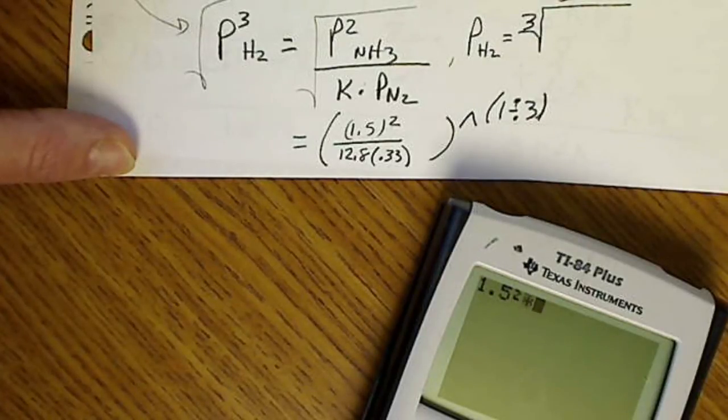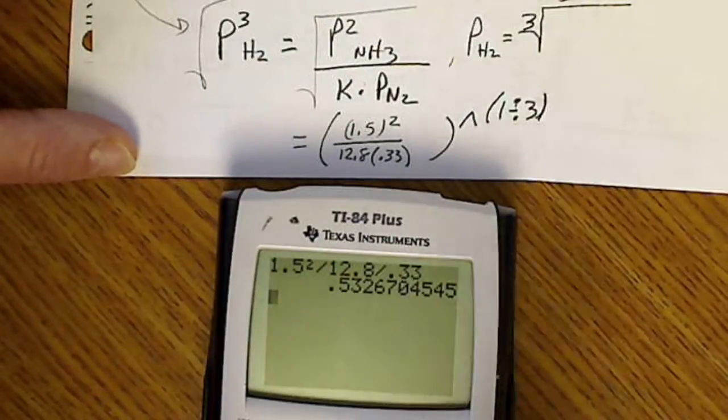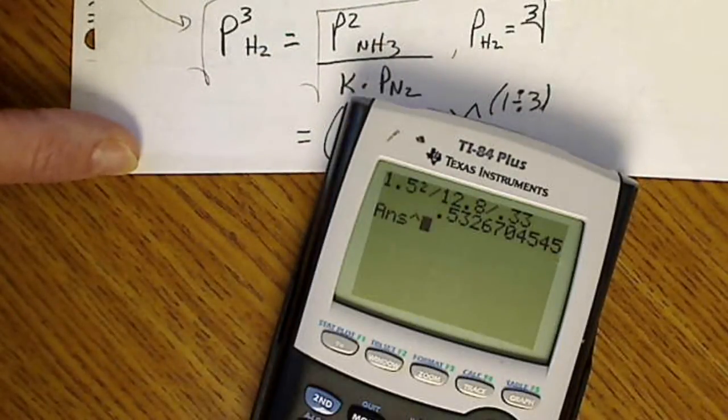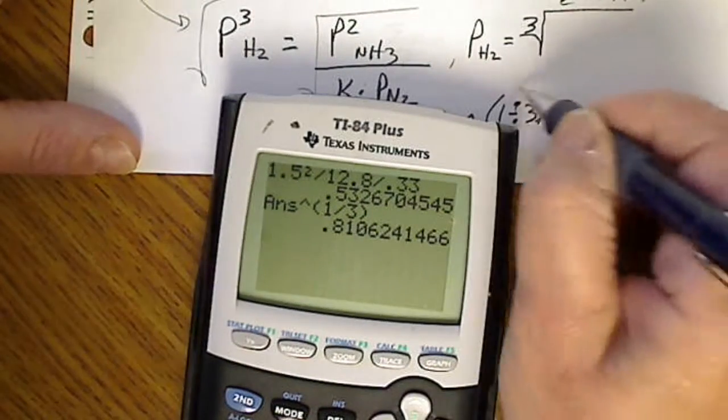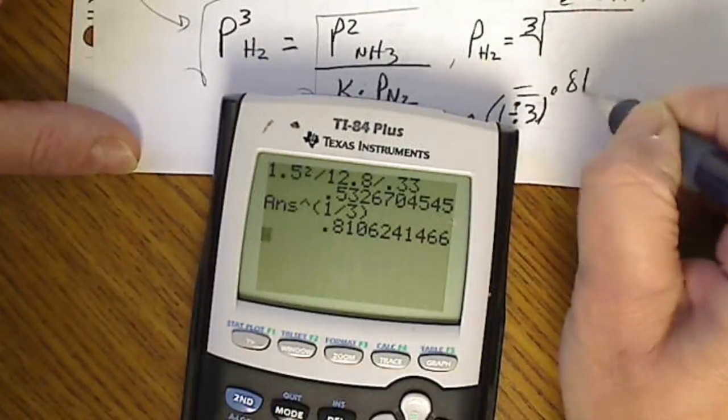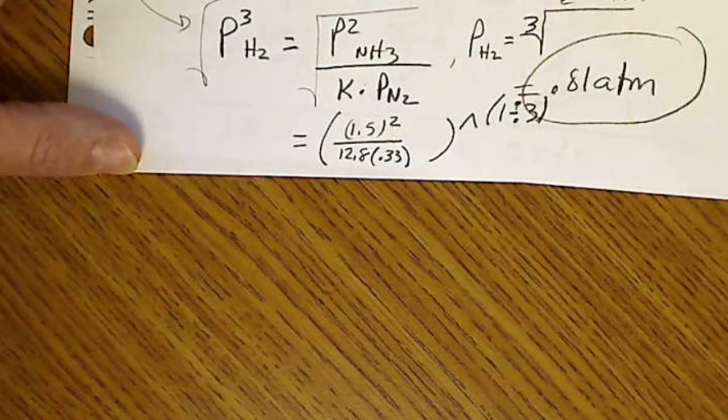Divide by 12.8, and divide by 0.33. I'm going to enter that number. So the cube root of this number is the same as raising that to the 1 divided by 3, and I've got to put that in parentheses. When I do that, I get 0.81. So this equals 0.81 atmospheres. And we can double check. That's the answer that we started with when we were looking for the equilibrium constant K.